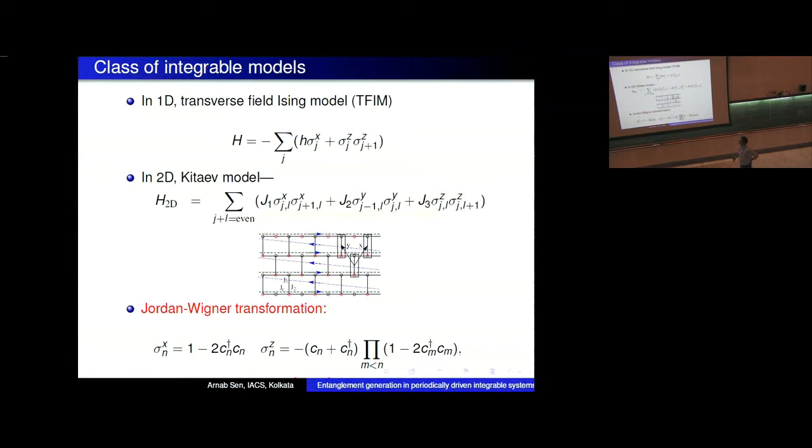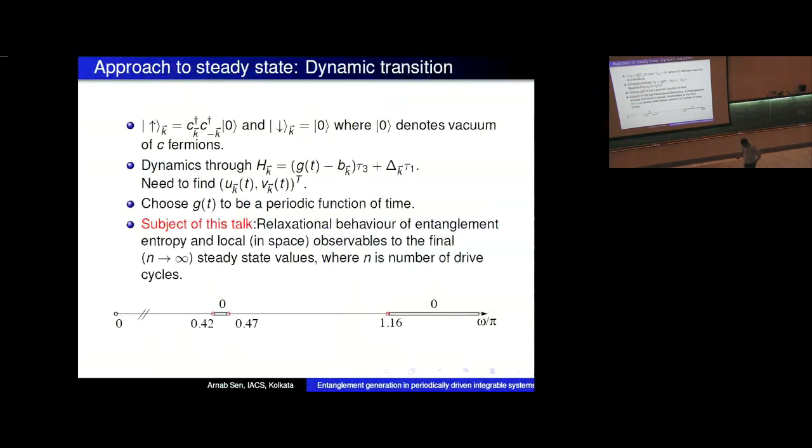Today we'll just restrict ourselves to this class of models. As I said, you can map the spins using the Jordan-Wigner transformation to free fermions. This mapping is non-local but it's still a perfectly unitary and one-to-one mapping, so you don't lose any information. Then because you get free fermions you can simply go to momentum space, and then the dynamics actually becomes very simple to imagine and calculate.